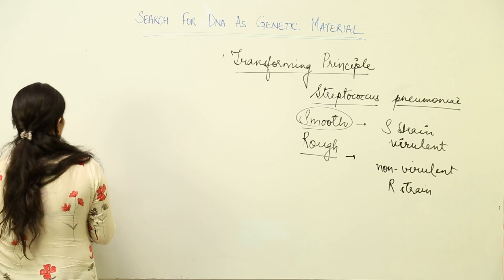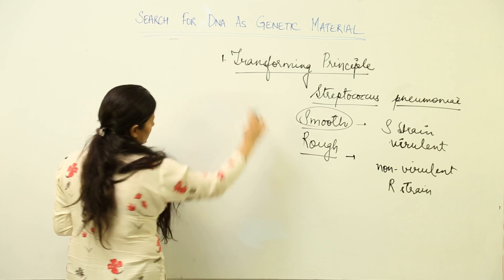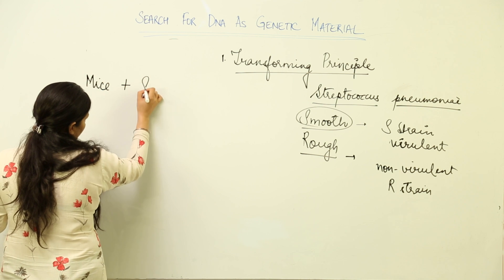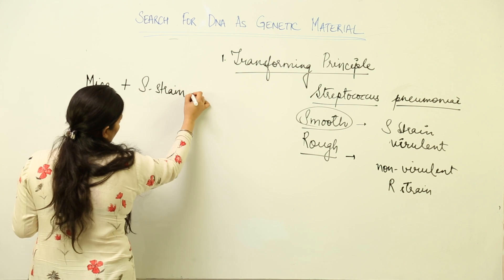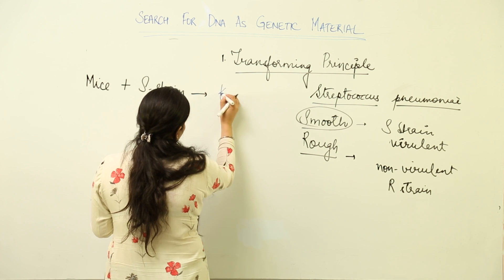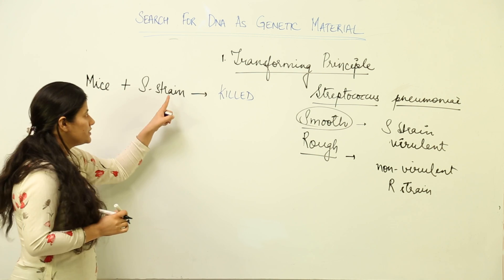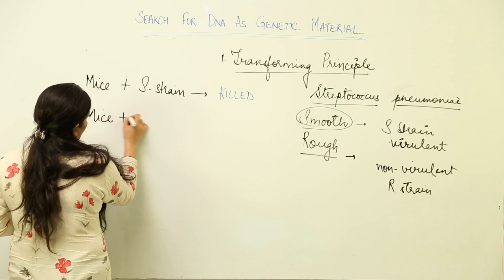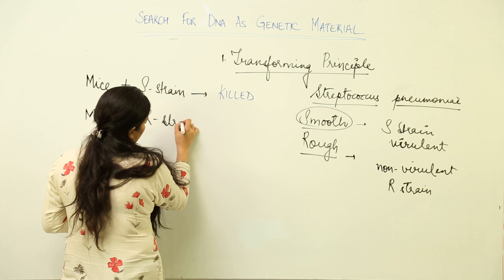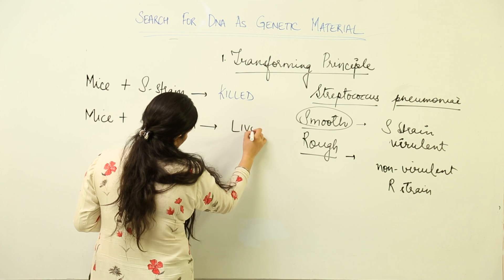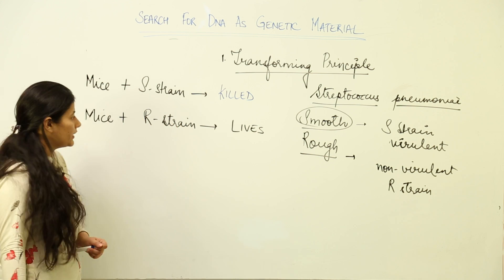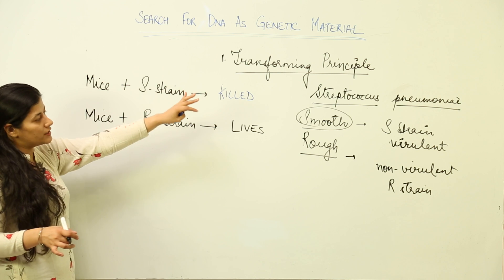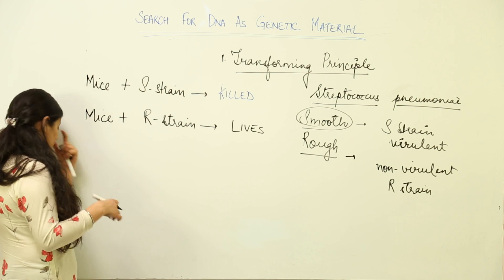Using these two colonies, Griffith conducted experiments with mice. When a mouse was infected with S strain, the mouse was killed — confirming S strain is virulent. When a mouse was infected with R strain, the mouse survived and did not die — confirming R strain is non-virulent.